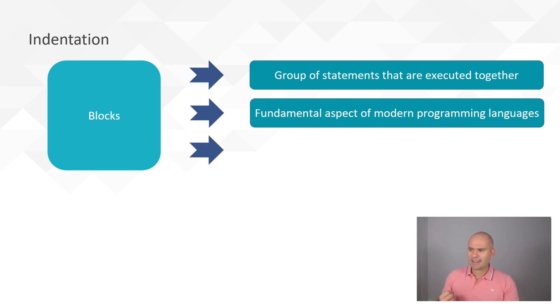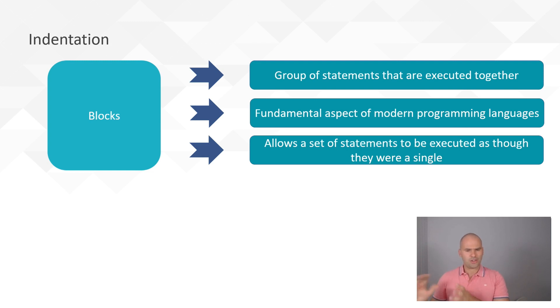They're a fundamental aspect of modern programming languages. And they allow a set of statements to be executed as if they were single. If you have an if statement, it leads to a block of code, and everything that's in that block gets executed if the if statement is true. A for loop has its block of code.